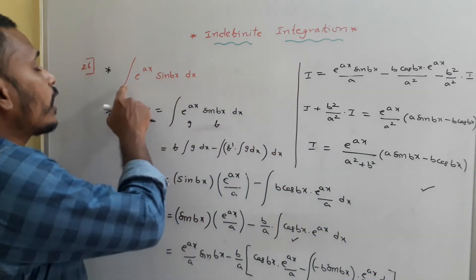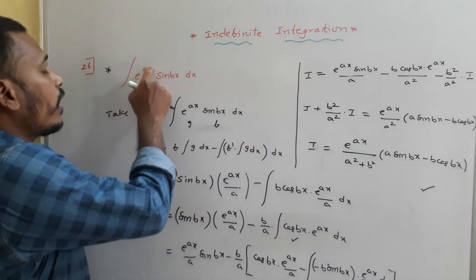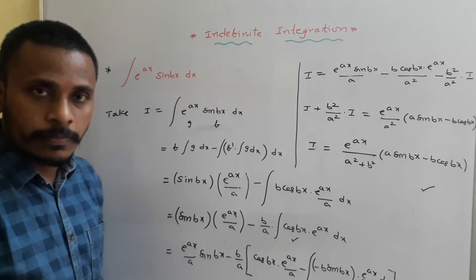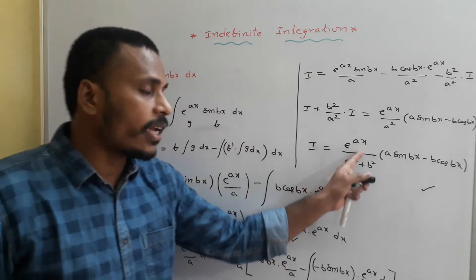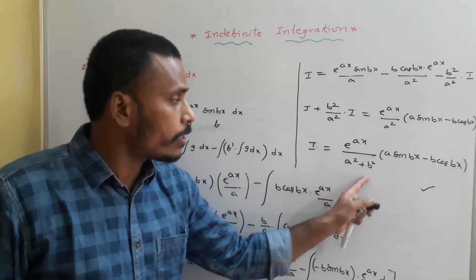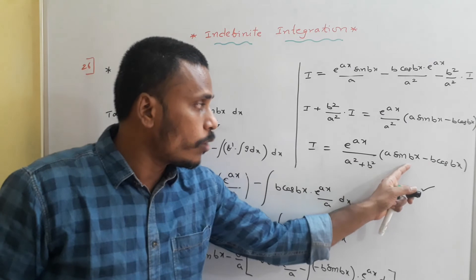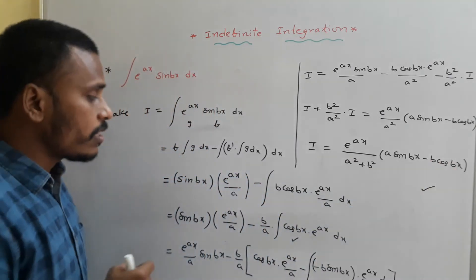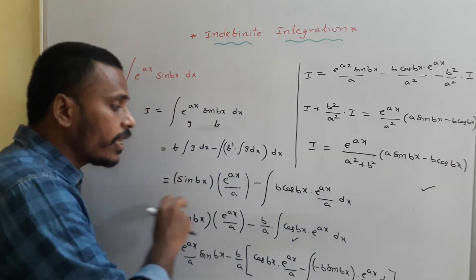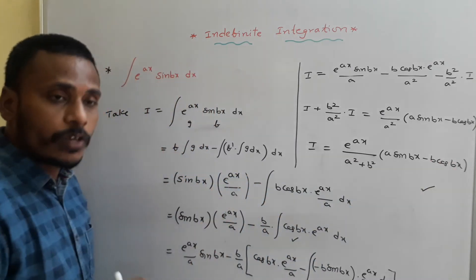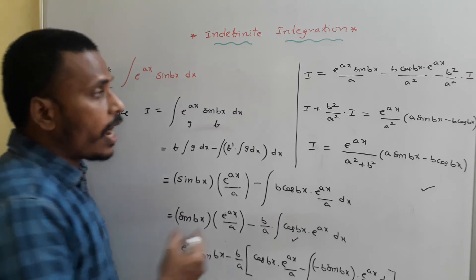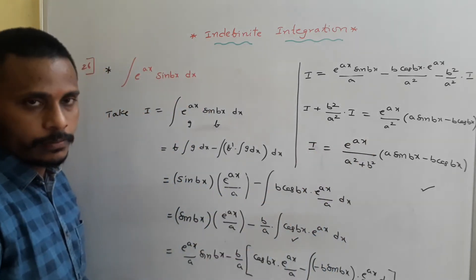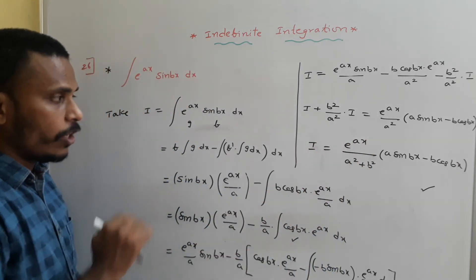So integral of e^(ax)·sin(bx)dx = e^(ax)/(a² + b²)·(a·sin(bx) − b·cos(bx)) + c. This is obtained just by applying integration by parts twice and with simple algebraic calculation.